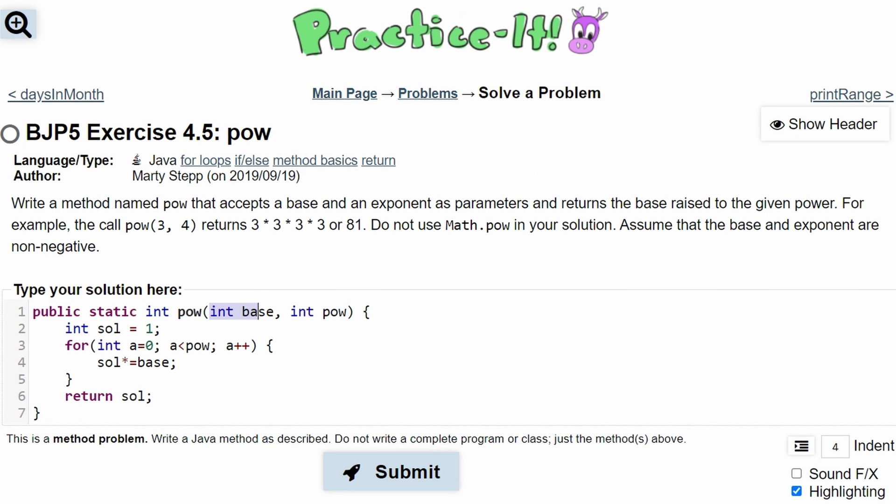So how this works is it takes an integer base and integer power. We're going to use this example, 3 and 4. We're setting our solution equal to 1, that way the first time we do this, we're multiplying it by itself.